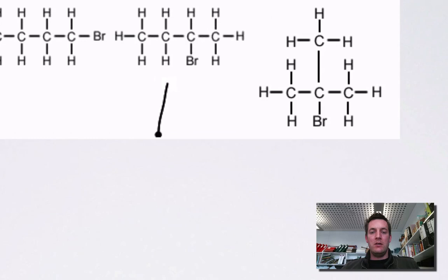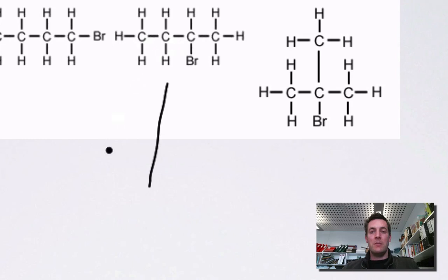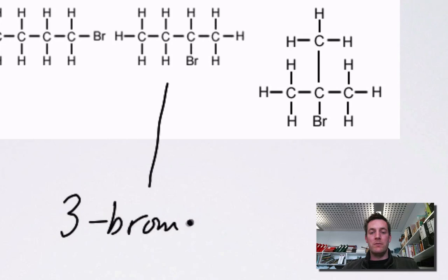This next one — the only difference is that they've both got a four-carbon chain, but the bromine has been attached to the second carbon in the chain. You could say it's attached to the third, but that would use a bigger number. We always go for the lowest number possible, so we call it 2-bromobutane.